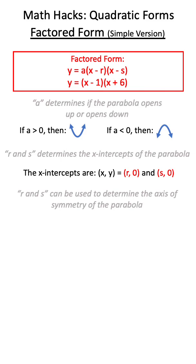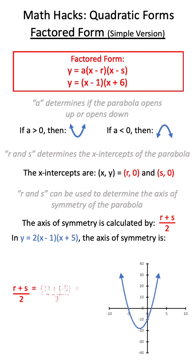R and S can also be used to calculate the axis of symmetry using this formula here. So for this equation, the axis of symmetry would be x equals negative 2.